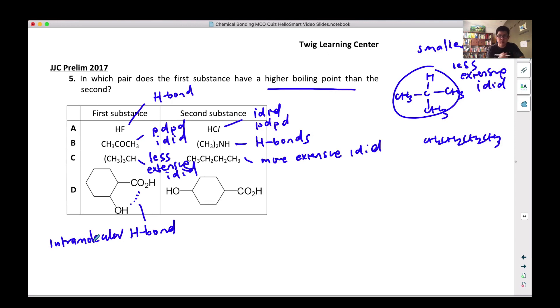it's not gonna have a higher boiling point. In fact, it has a lower boiling point. So obviously the answer is A because HF has hydrogen bond while HCl only has IDID and PDPD, all right.